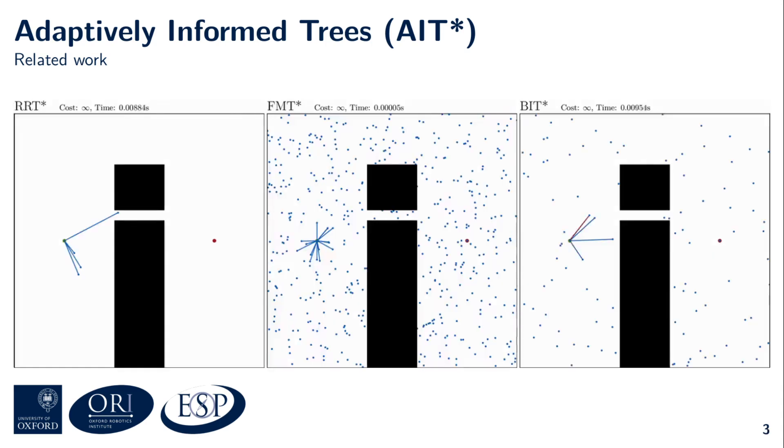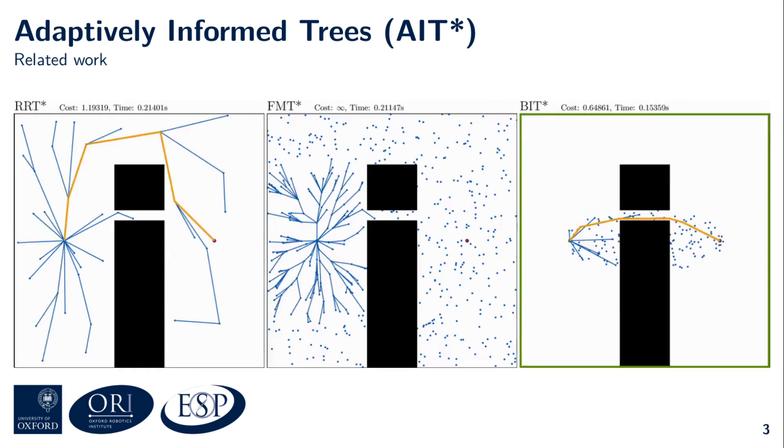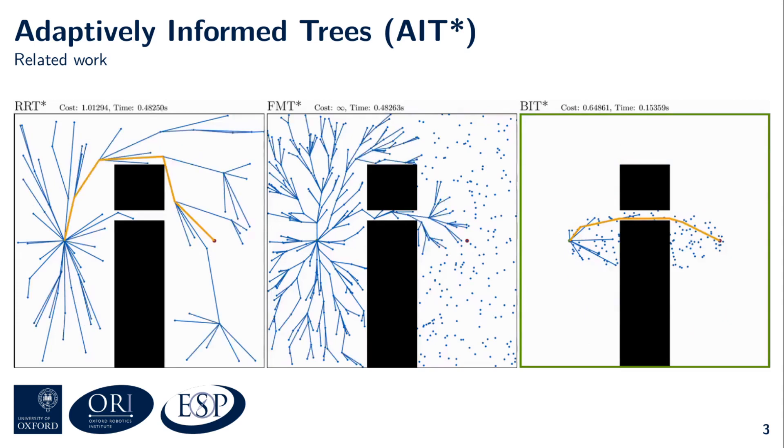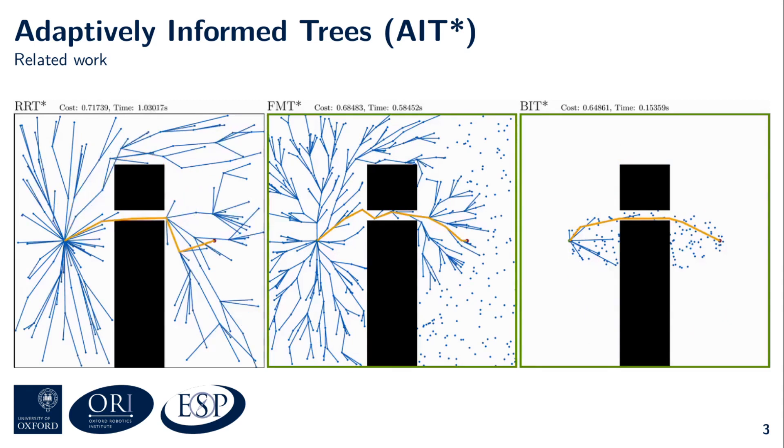The blue lines represent the edges of the planner's search trees. These edges are fully evaluated by the planners, which includes checking them for collision. This collision detection is known to be a major computational bottleneck in sampling-based path planning. Notice that all planners spend a lot of their computational resources to evaluate edges that don't contribute to a solution.